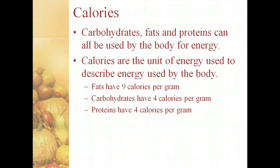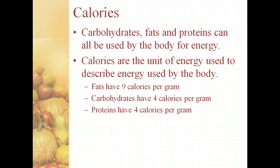Calories are a unit of energy used to describe how energy is used within the body. Carbohydrates, fats, and proteins can all be used as a form of energy. Fats have the highest amount of energy per weight at 9 calories per gram, while proteins and carbohydrates are less energy dense at 4 calories per gram.